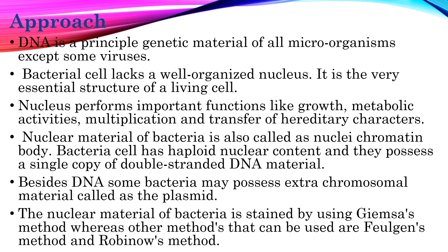Some bacteria may also possess extra-chromosomal material called plasmids. The nuclear material of bacteria is stained using Giemsa's staining method, while other methods that can be used are Feulgen's method and Robinow's method.